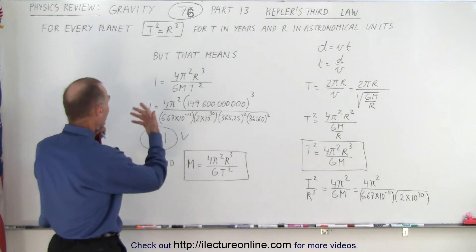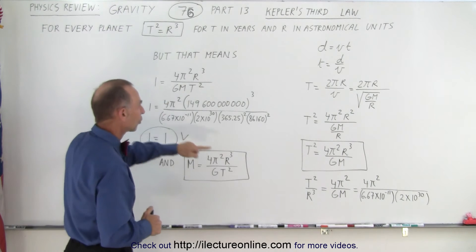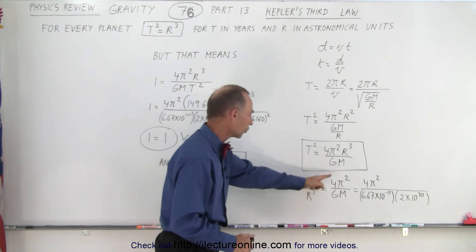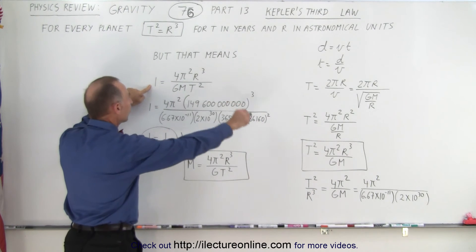So because we said that that ratio should equal 1, let's say that we solve this equation for 1. In other words, we put r³ there and T² there, we solve it equal to 1, and we plug in all the values.